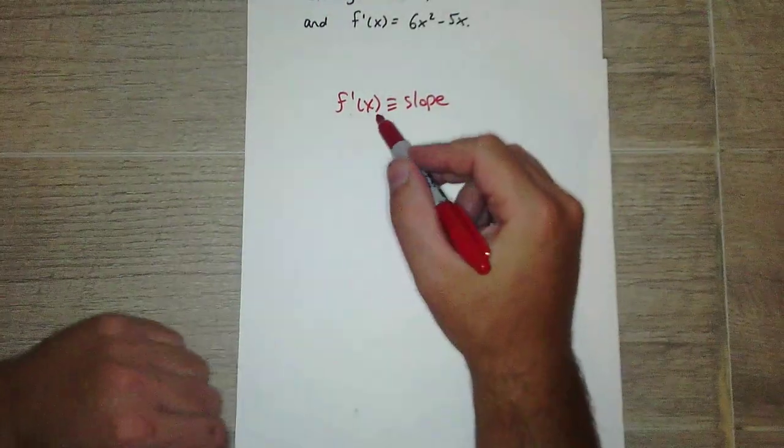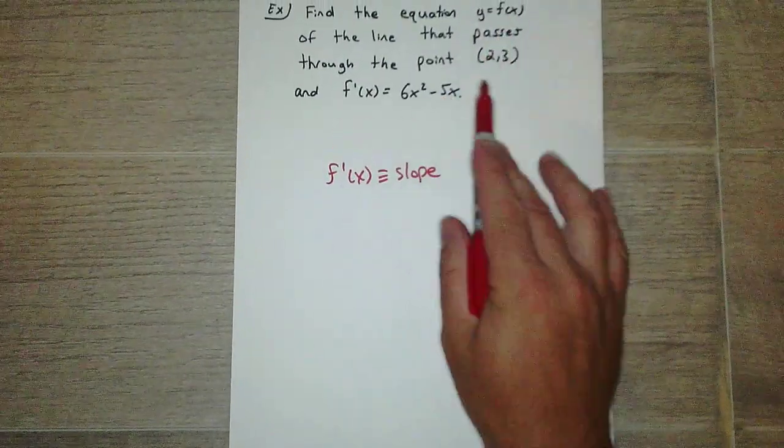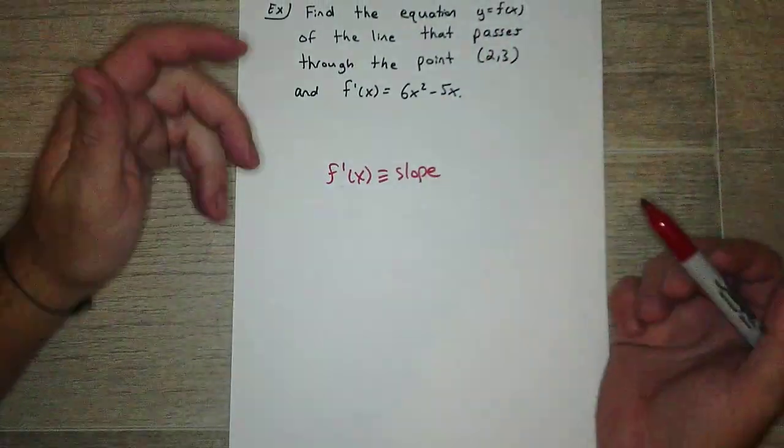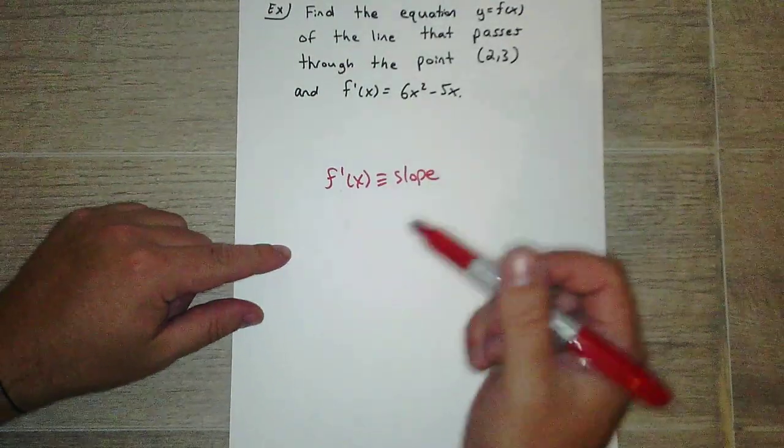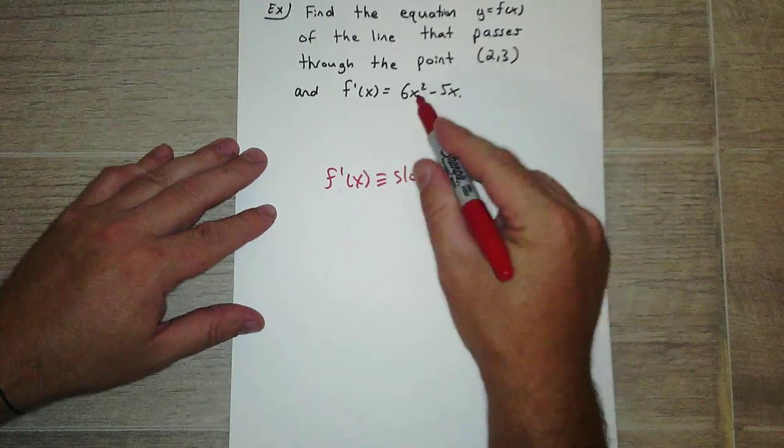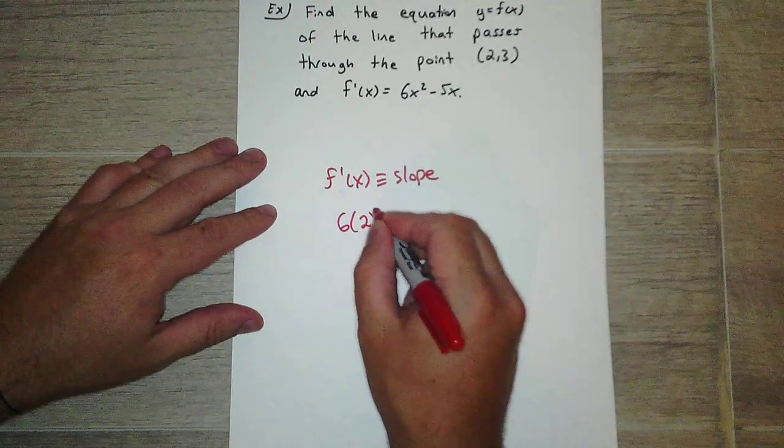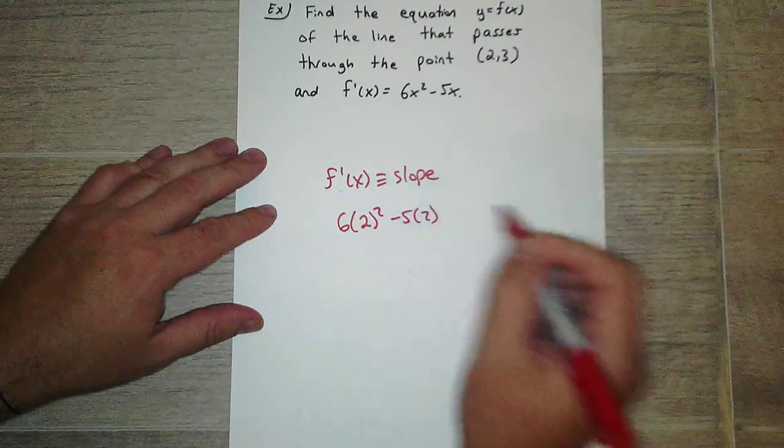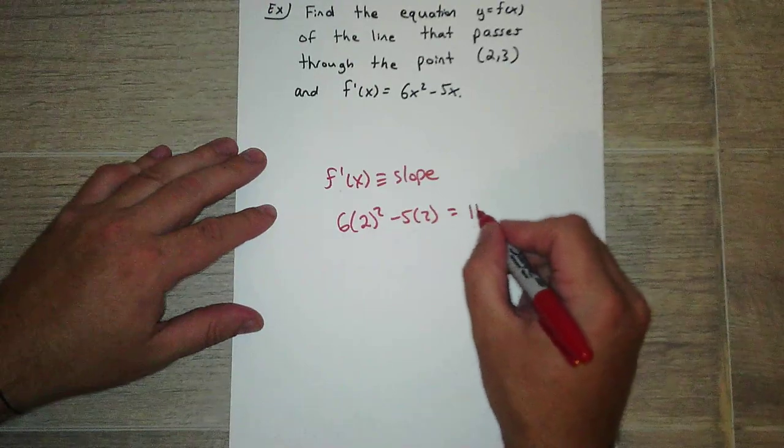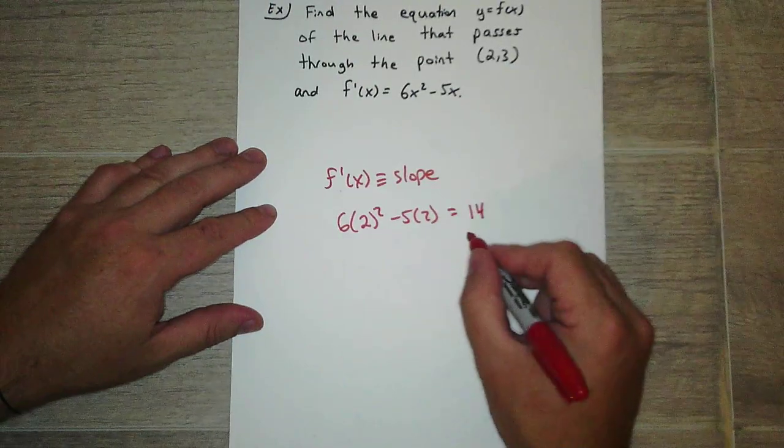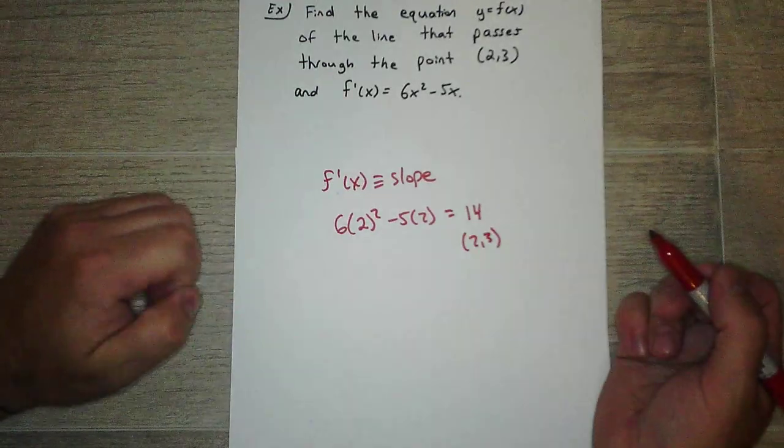So if we have a value for x, we can plug in. If we have a value for x that we can plug into, we can get an actual slope value. So if we plug into here, we have 6(2) squared minus 5 times 2. So that's 4, that's 24 minus 10, so that's 14. That's our slope. And then we have this point. The other way, and then you can use equation line formula.